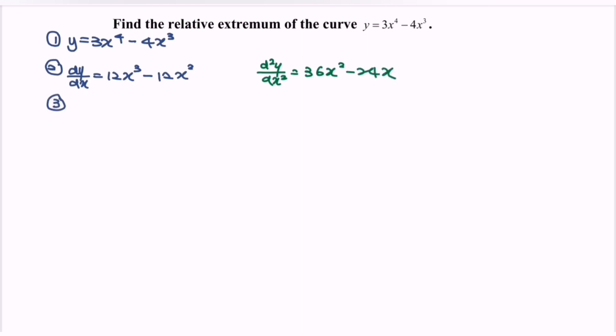Step number three, find the critical value or the number where we have dy dx is equals to 0. Meaning that 12x cube minus 12x square is equals to 0. Factor the 12x square and we will have x minus 1 equals to 0. So in here, x is equals to 0, x is equals to 1.